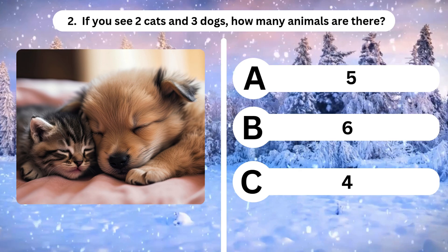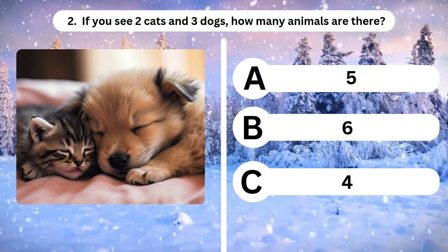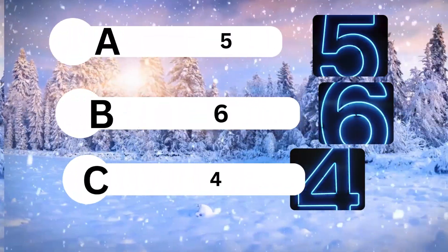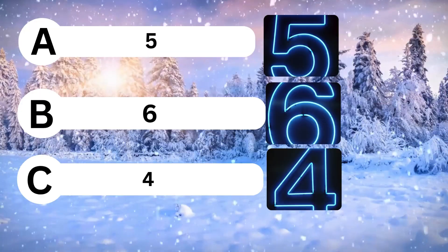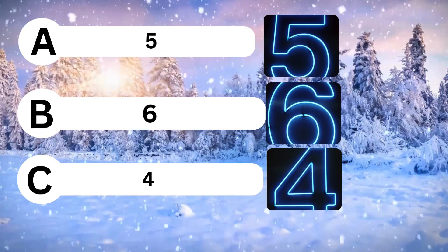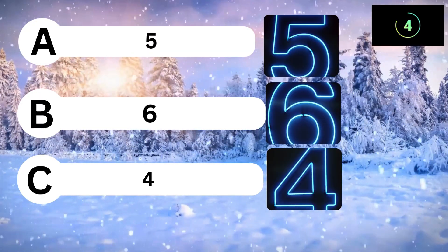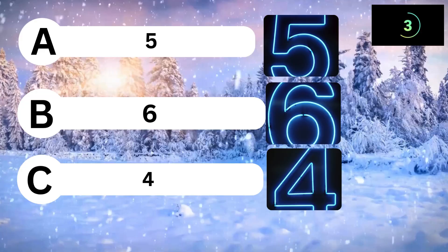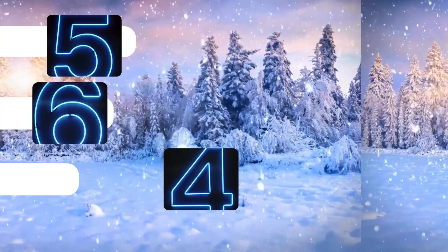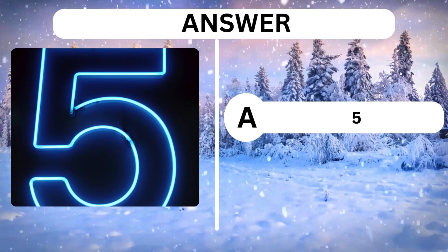Question 2. If you see 2 cats and 3 dogs, how many animals are there? A, 5. B, 6. C, 4. Answer is A, 5.